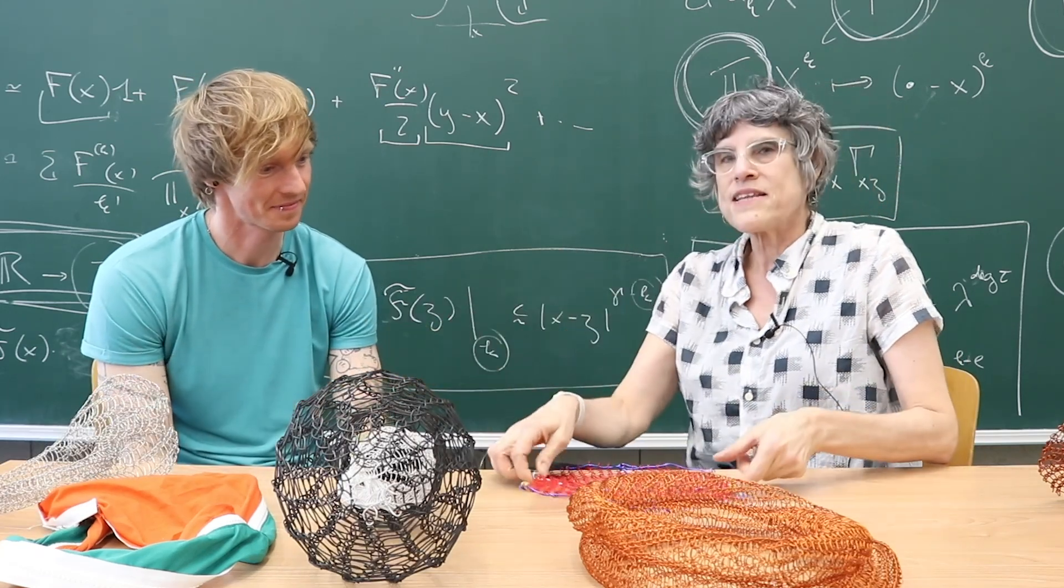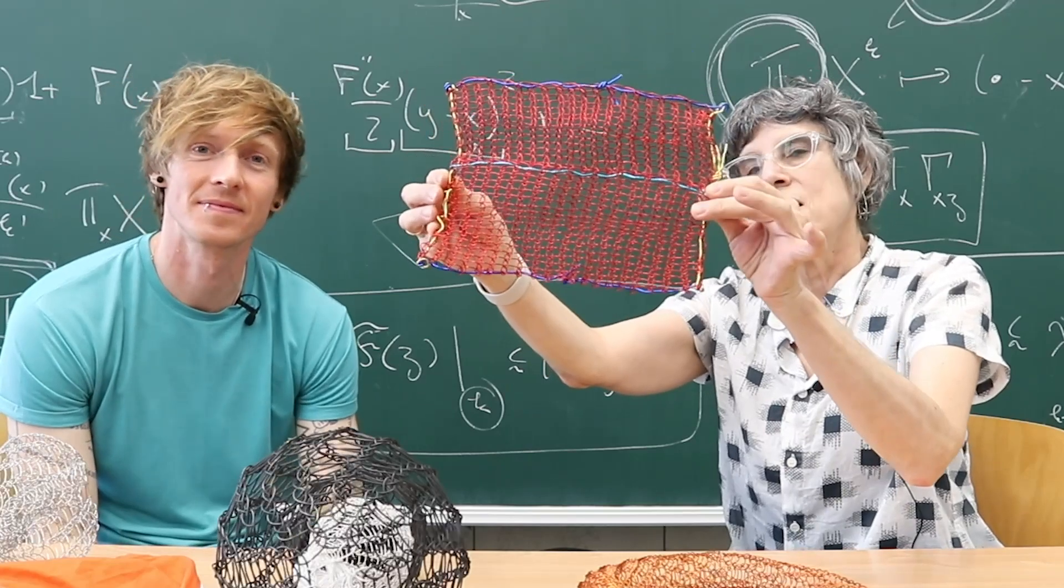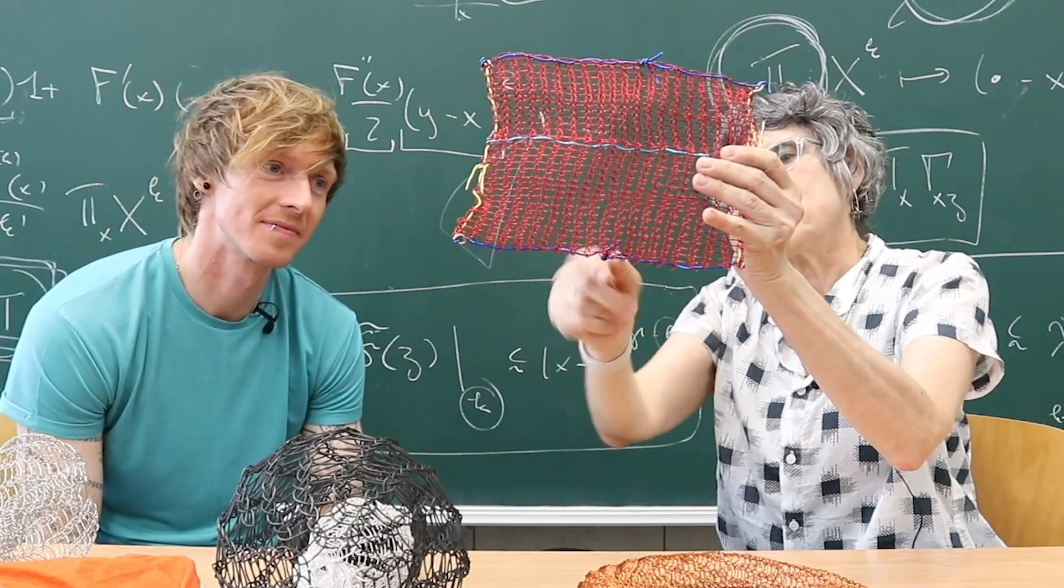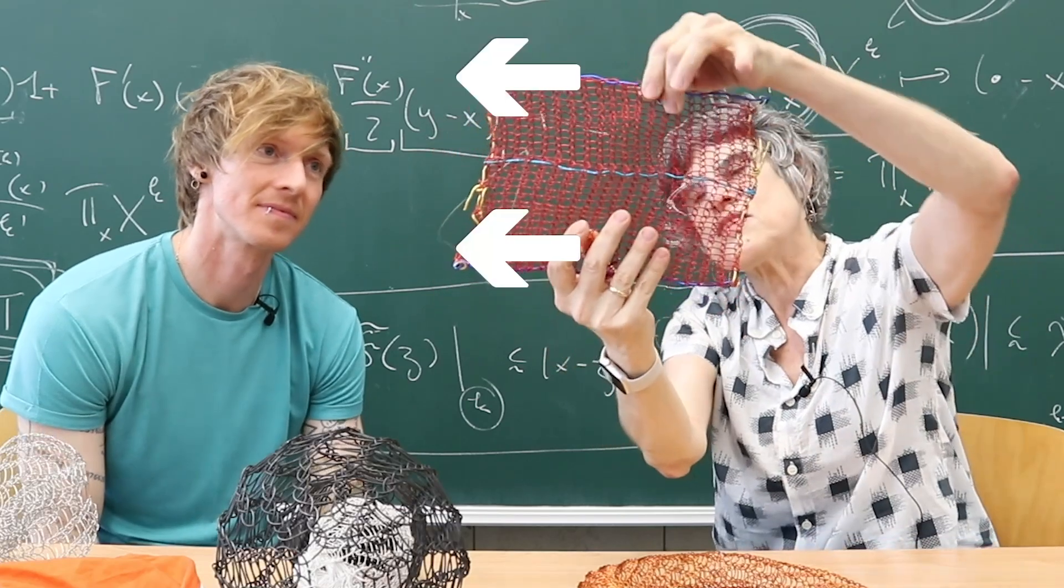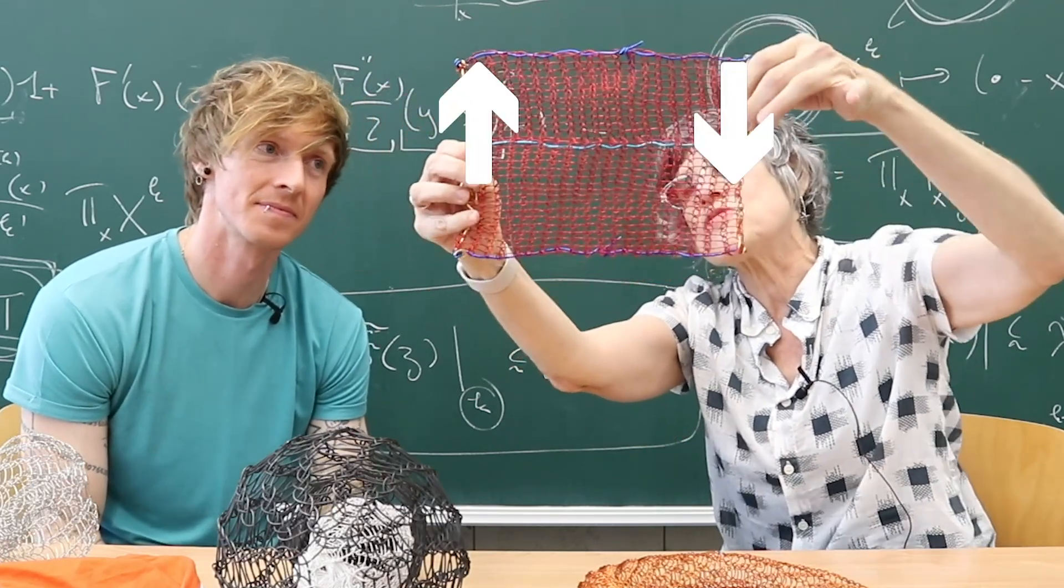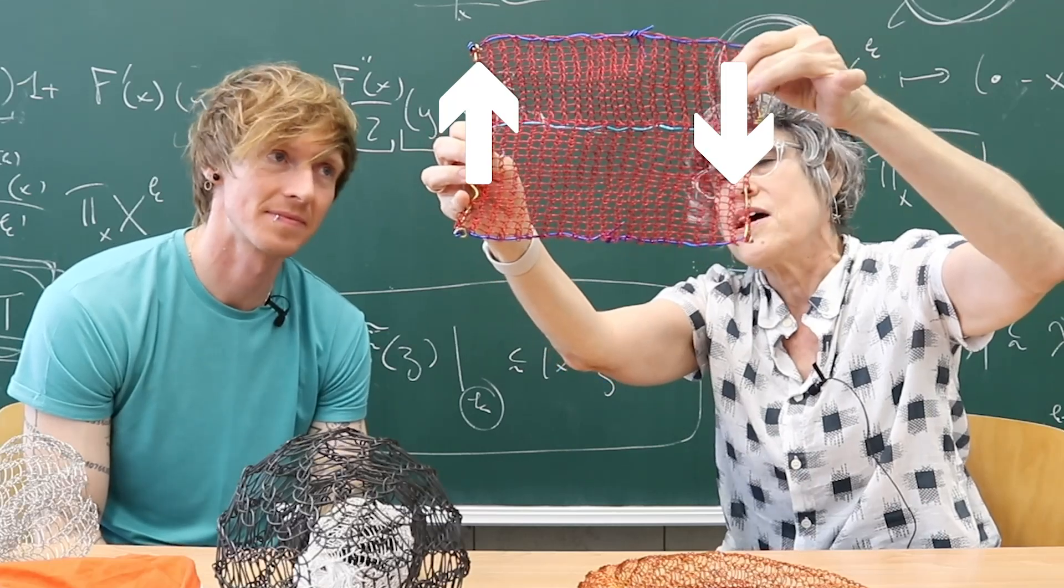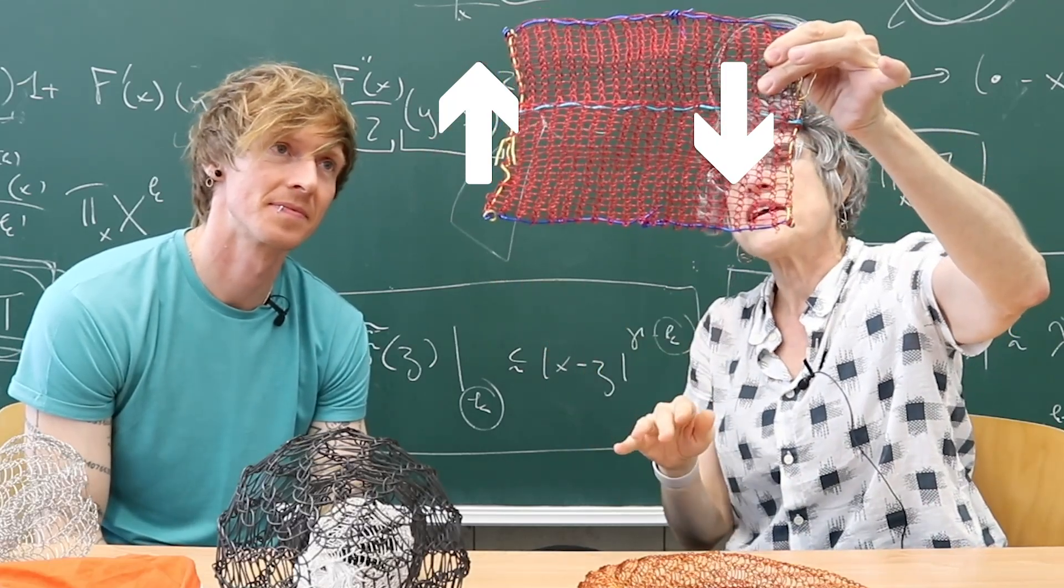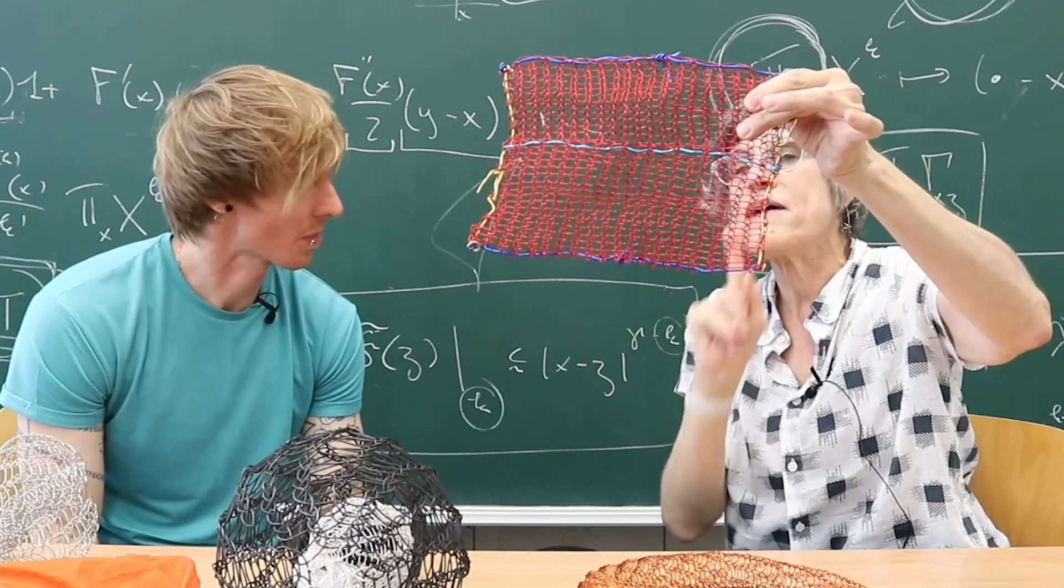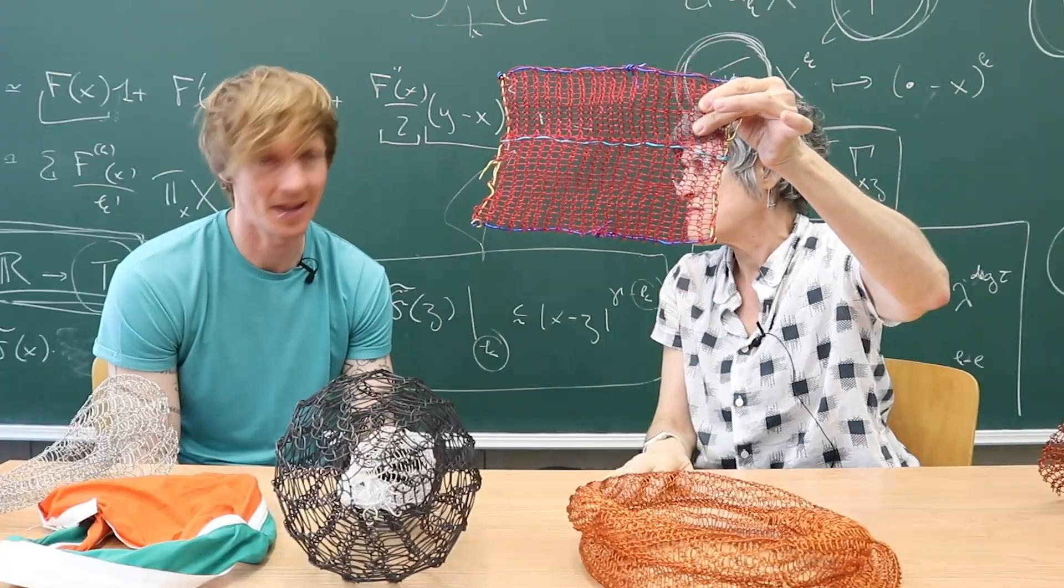And what we mean is, we start with a rectangle like this one here, and we have the opposite edges. They have arrows. There are two arrows, and they point in the same direction. Here there are two arrows, and they point in opposite directions. And our mathematical mind, what it has to do is glue the blue with the blue, and the yellow with the yellow, respecting the direction of the arrows.